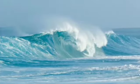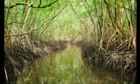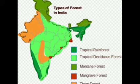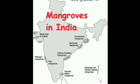The mangrove tidal forests are found in the areas of coasts influenced by tides. Mud and silt get accumulated on such coasts. Dense mangroves are the common varieties, with roots of the plant submerged under the water. The red markings denote the mangrove forest.